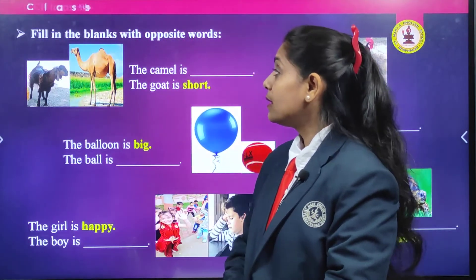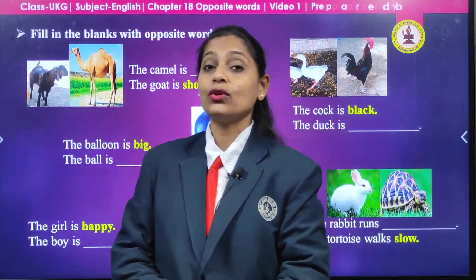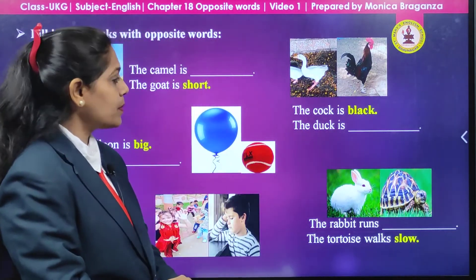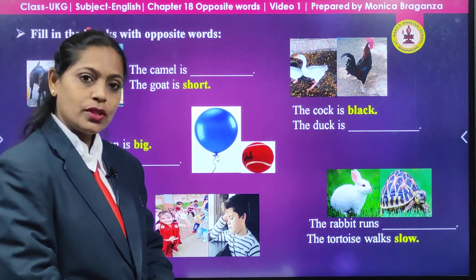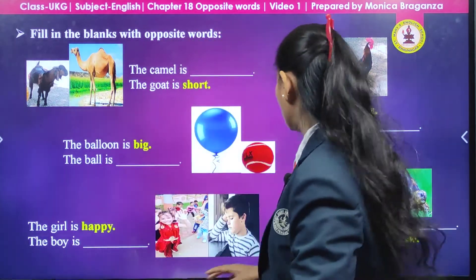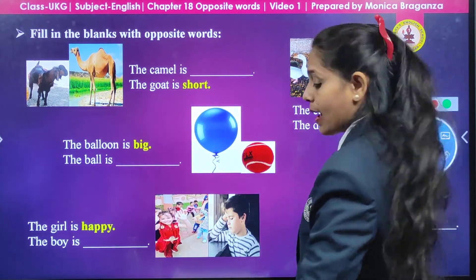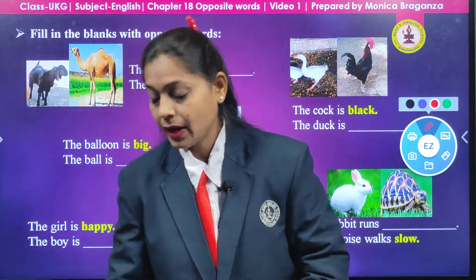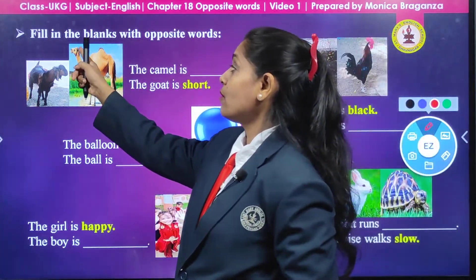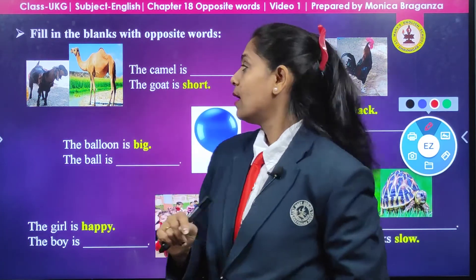Now children, here we are having one activity. You are going to fill in the blanks with the opposite word — this is also very easy. You have to look at the picture and do it. Now look at the first picture — we have to fill in the blanks with opposite words.